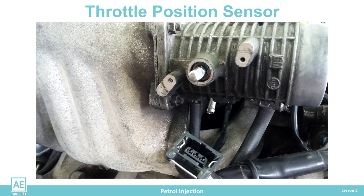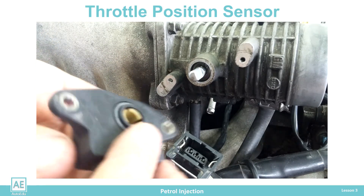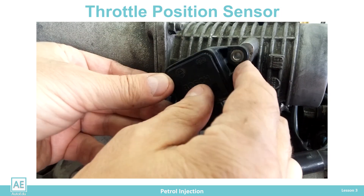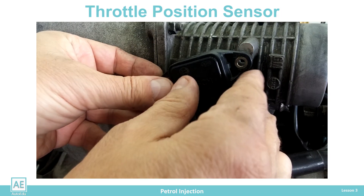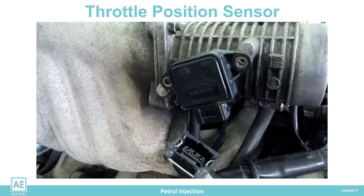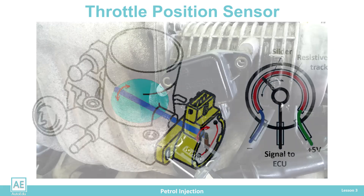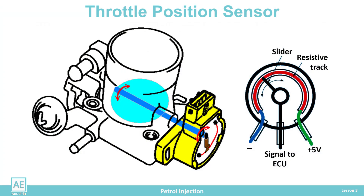What is needed is to know how much partial load it is — i.e., precise measurement of the angular position of the throttle. That is why a potentiometer sensor of the throttle position was introduced instead of a sensor with buttons.